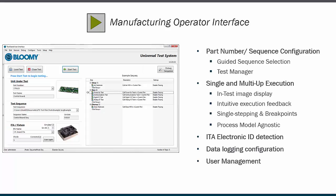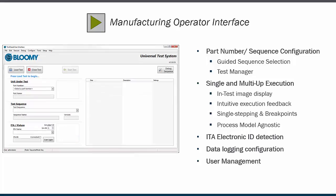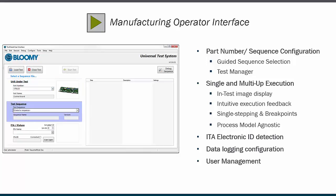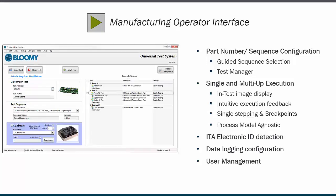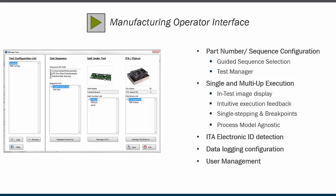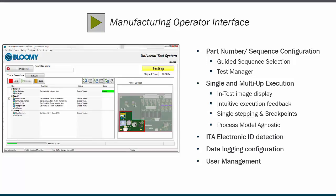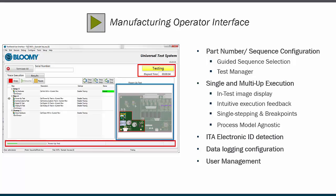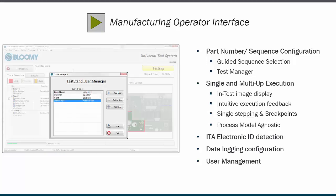The Manufacturing Operator Interface implements common features of a test stand operator interface, like sequence selection and execution, but does so with manufacturing engineers and operators in mind. It is part-number driven rather than sequence-file driven, so rather than browsing a file hierarchy for the correct sequence file, operators select their unit under test, then the OI loads the appropriate sequence and verifies the electronic ID of the ITA before allowing the test to commence. A test management utility allows supervisors to define the test sequences and valid test fixtures, or ITAs, for each unit under test. The EFT Manufacturing Operator Interface uses large touchscreen-friendly buttons and provides features and tools geared towards executing Test Stand in the manufacturing environment, such as sequence-driven UI images and status feedback, advanced debugging, report configuration, and integrated user management.